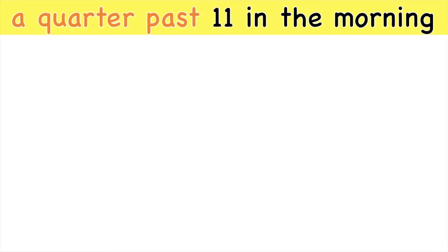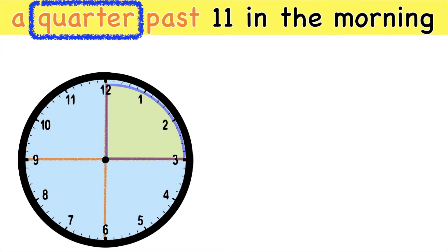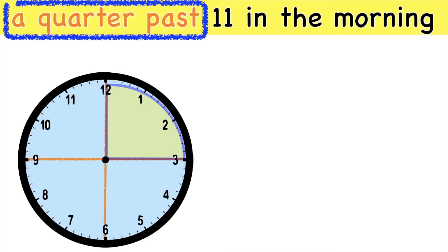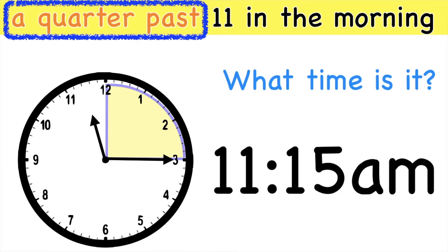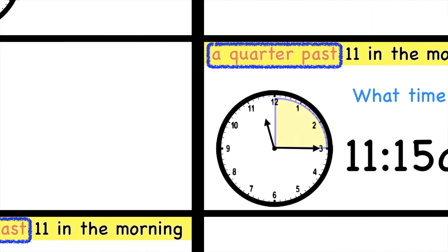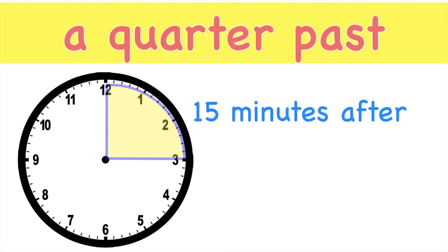How about if we have this? Quarter past 11 in the morning. So when you say quarter, one whole is divided into four and one part of it is what we call a quarter. So a quarter past 11 in the morning — this is 11 o'clock. Let's count: 5, 10, 15. That's correct! It's 11:15 a.m. Always remember, when you see the word quarter past, that means 15 minutes after.